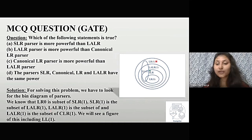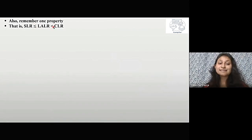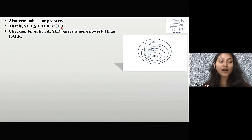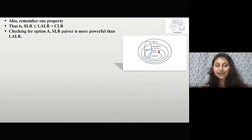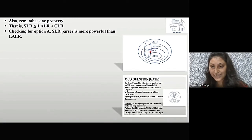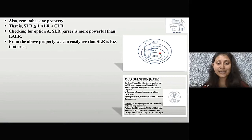Also remember the property: SLR ≤ LALR ≤ CLR. Checking option A — SLR parser is more powerful than LALR. From the above property, SLR is less than or equal to LALR, but not more powerful. So option A is not correct.